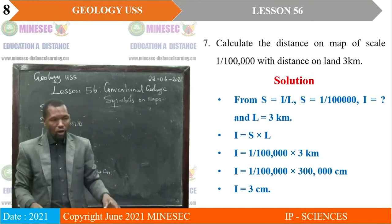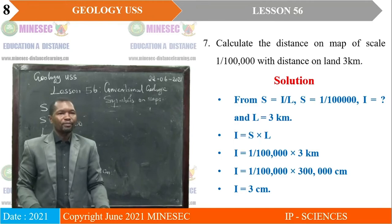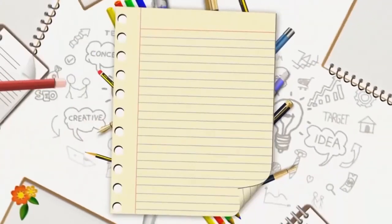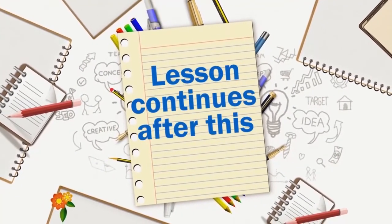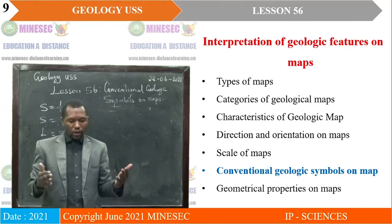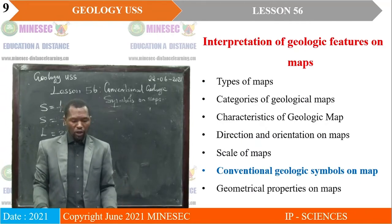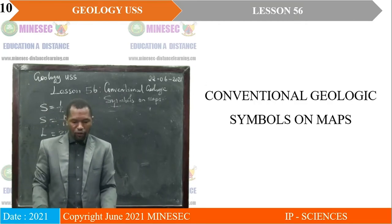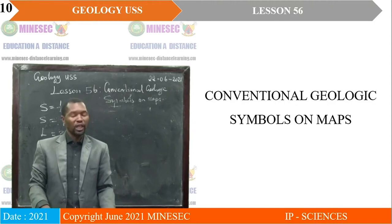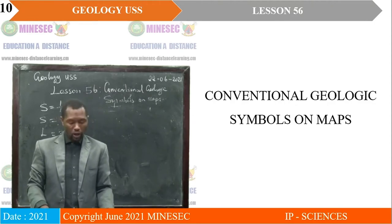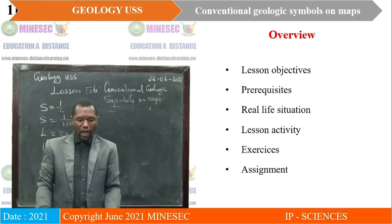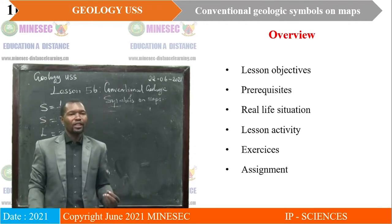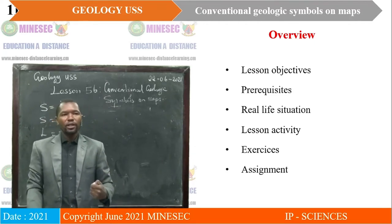That is how you were supposed to work on your assignment — giving us a review of skills on map scales. Our lesson for today will be on conventional geologic symbols on maps. Lesson 56 is titled 'Conventional Geologic Symbols on Maps,' and we will look at the lesson objectives, prerequisites, the real-life situation, the lesson activity, exercises, and assignment.